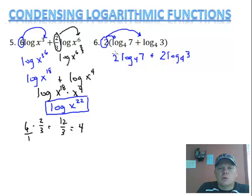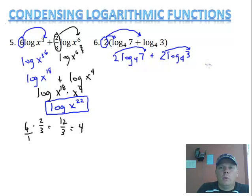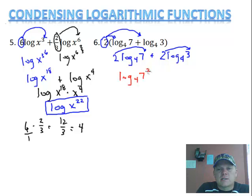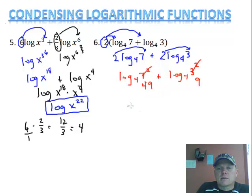Now I'm going to take those 2s and put them as my exponents, and then simplify it. I want you to pause this and see if you can finish this one on your own. Alright — so this will be log base 4 of 7 to the 2nd, which is 49, and log base 4 of 3 to the 2nd, which is 9. Since it's plus, I'm going to make a multiplication. So it will be log base 4 of 49 times 9, which is 441. And that is your condensed, simplified version.